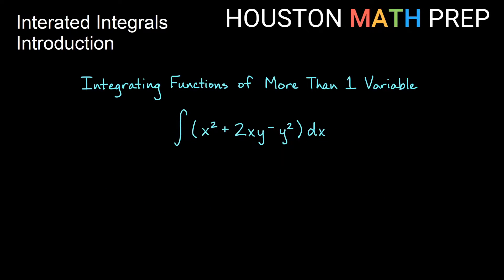Let's look at an example. We have the integral of x squared plus 2xy minus y squared, all integrated dx, so we're integrating with respect to x, meaning we're treating y as a constant. For our first term we just do this like normal — we're integrating dx and we have a term only with x, so power rule applies. In the next term we have 2xy, and notice that the 2 and the y are considered constants since we're integrating with respect to x. So we think about just integrating x and then multiplying what we get by 2y at the end.